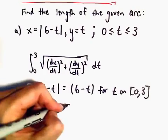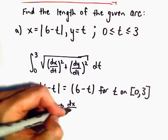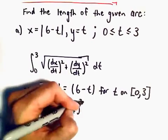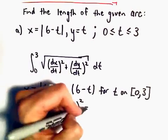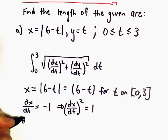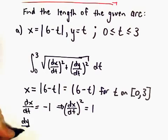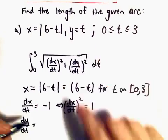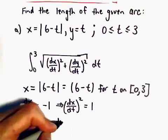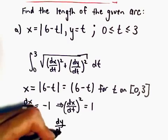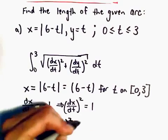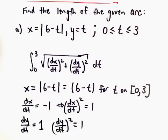That tells us the derivative of x with respect to t squared is just going to equal positive 1. The derivative of y with respect to t is also just going to be positive 1, so the derivative of y with respect to t squared will also just be positive 1.